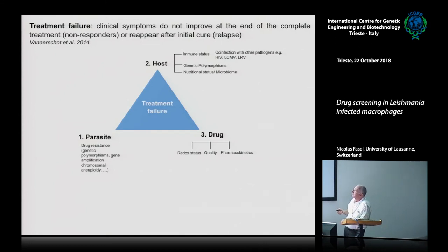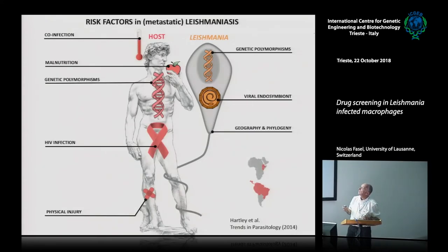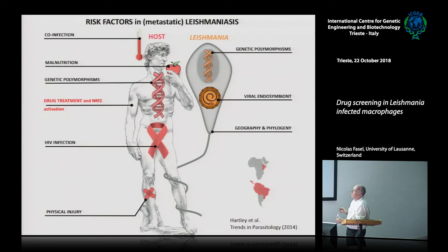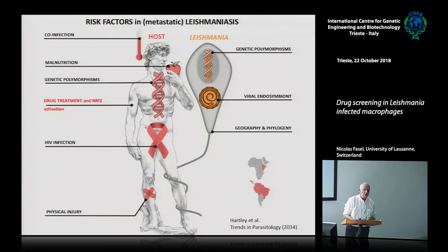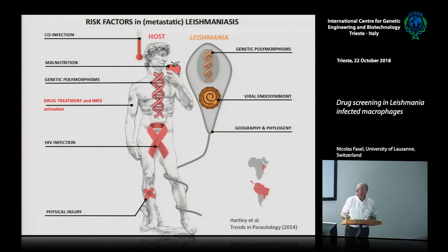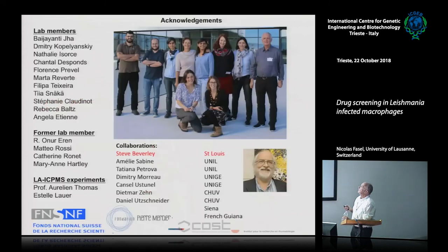You can induce parasite dormancy and fail to kill the parasite. These three factors — parasite, host, and drug — interact with each other. In terms of drug treatment, depending on what you do, drugs like antimony can induce specific transcription factors like NRF2, and activate ABCB6 — this may be one reason for drug relapse or resistance. This work was done by our group.